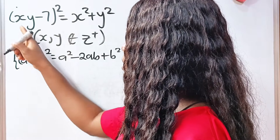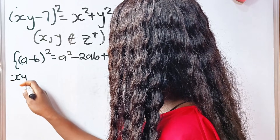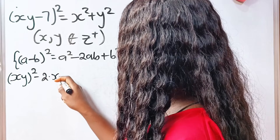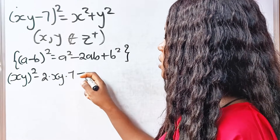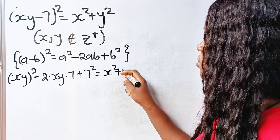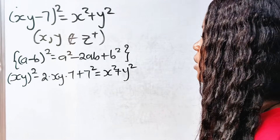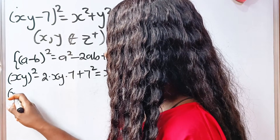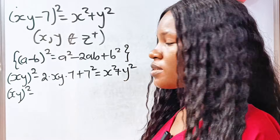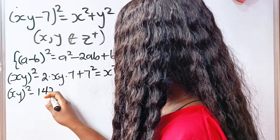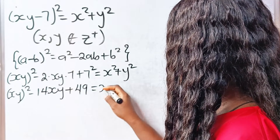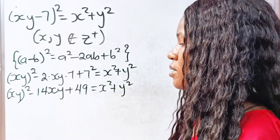Expanding in this form, we have (xy)² - 2 multiplied by xy multiplied by 7, then plus 7 squared. And this is equal to x² + y². So if we expand, we have (xy)² minus 2 times 7, which is 14, so minus 14xy plus 49 is equal to x² + y².